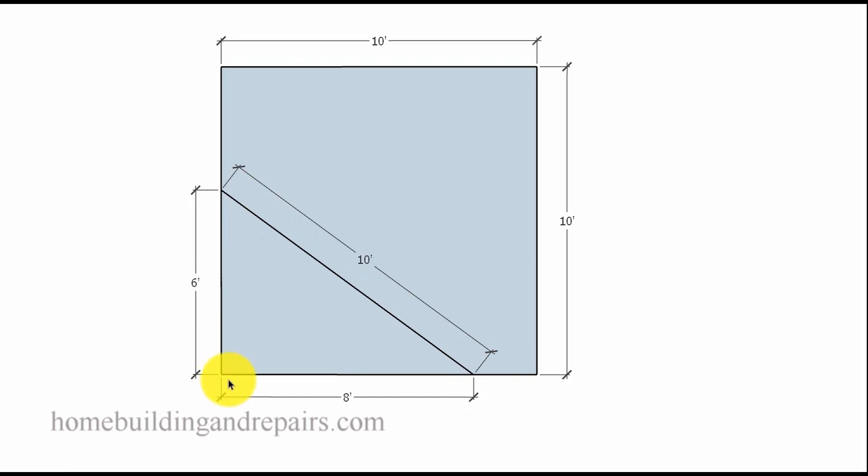Because if all we have to do is come to here, then this part of the building might be square. But if this line is not straight, or this line isn't straight, then we're going to have a problem.